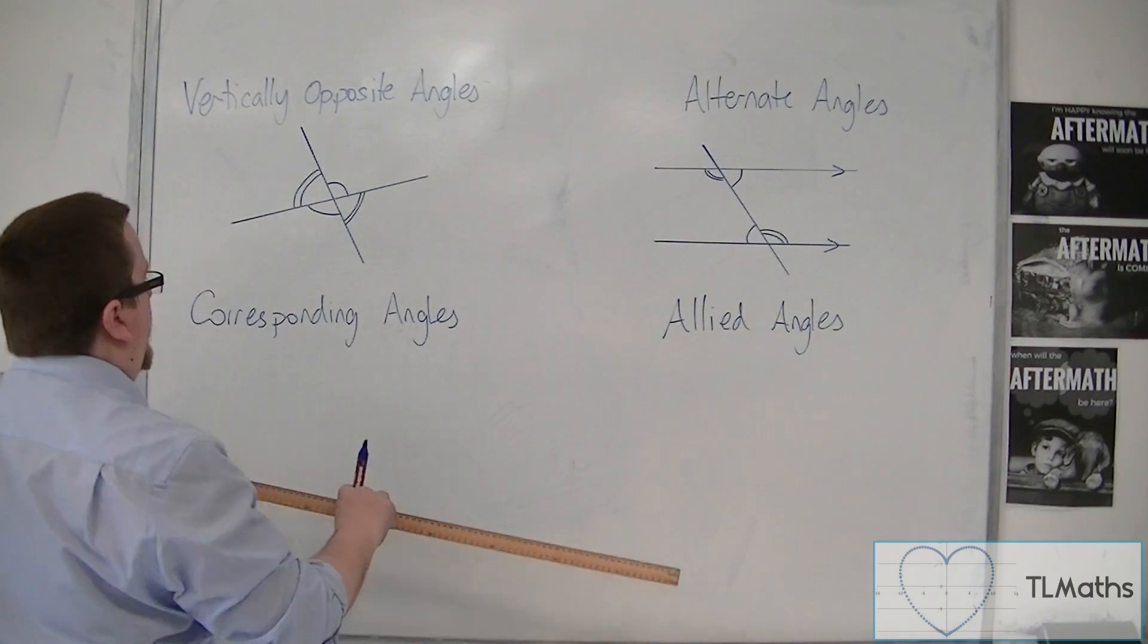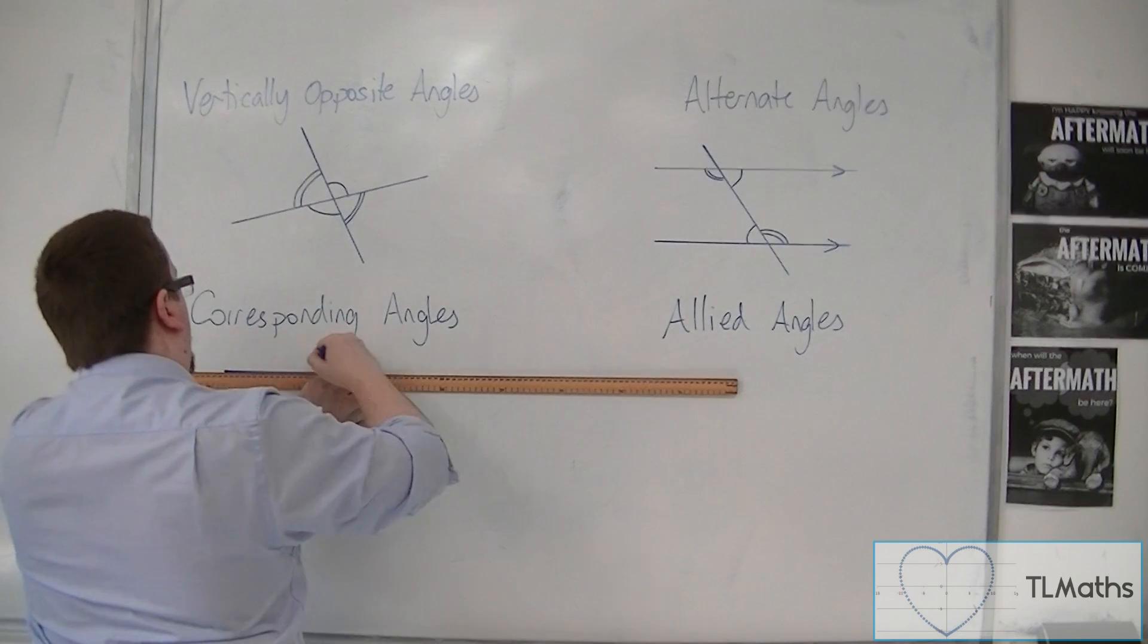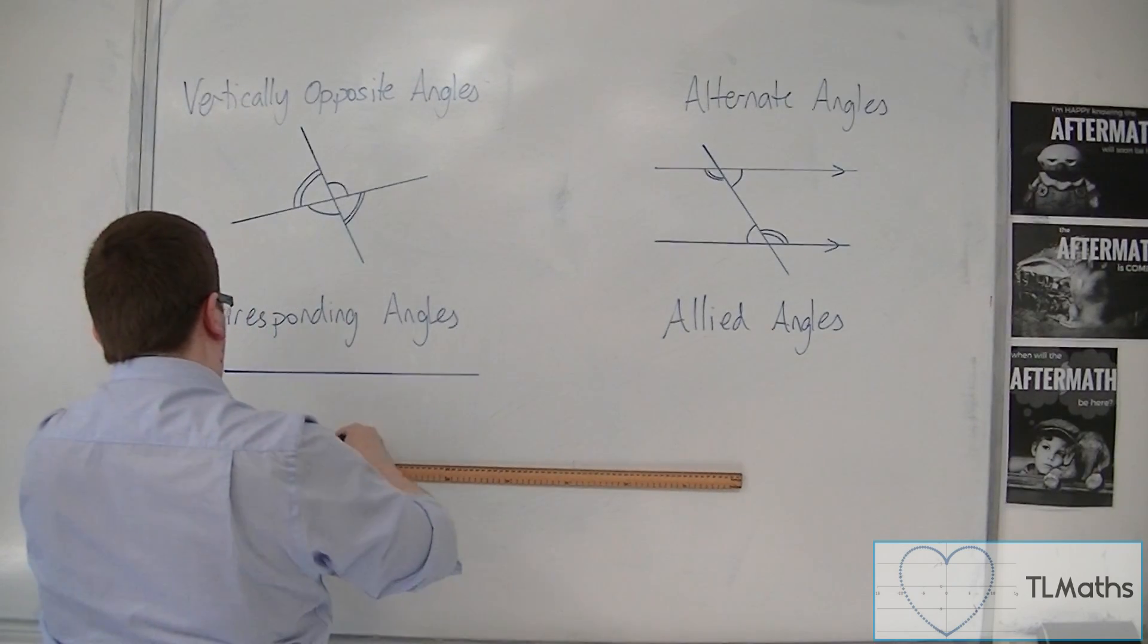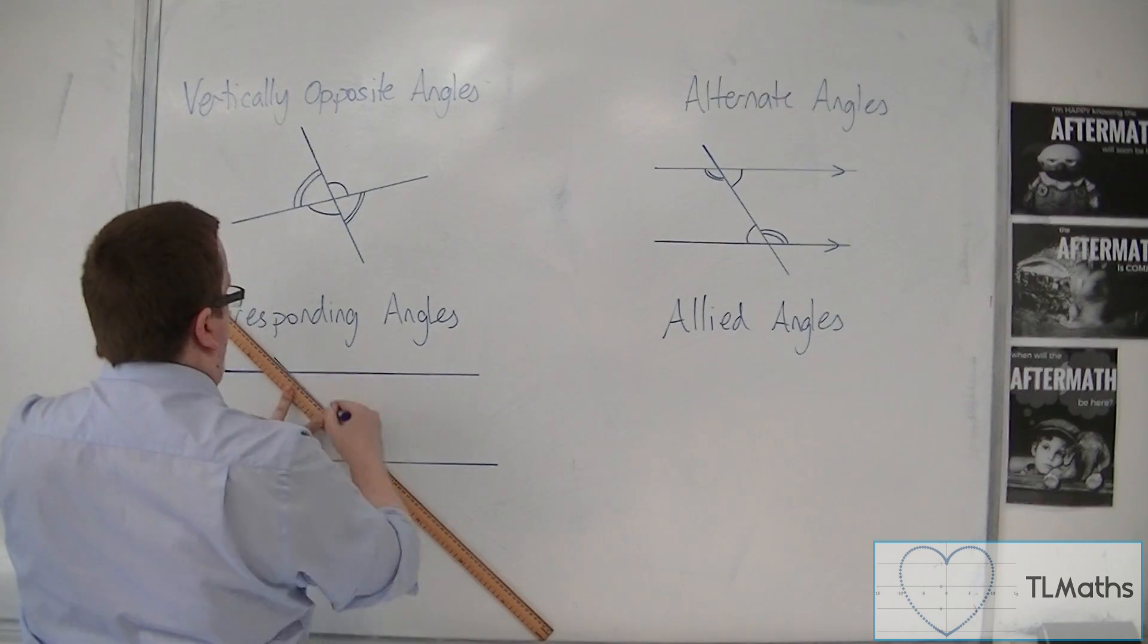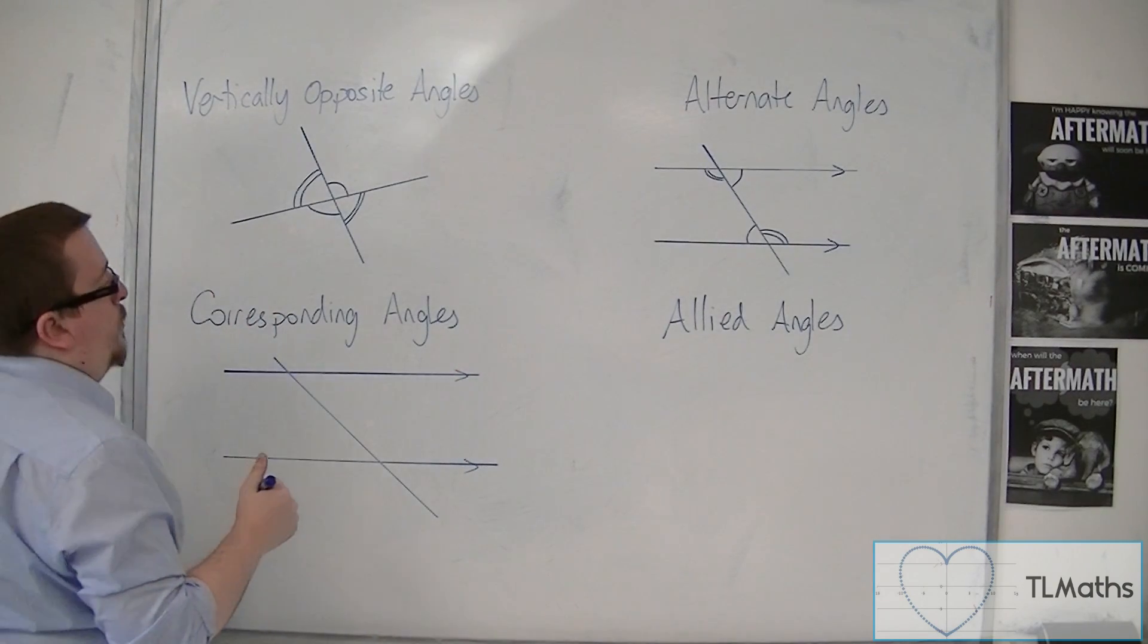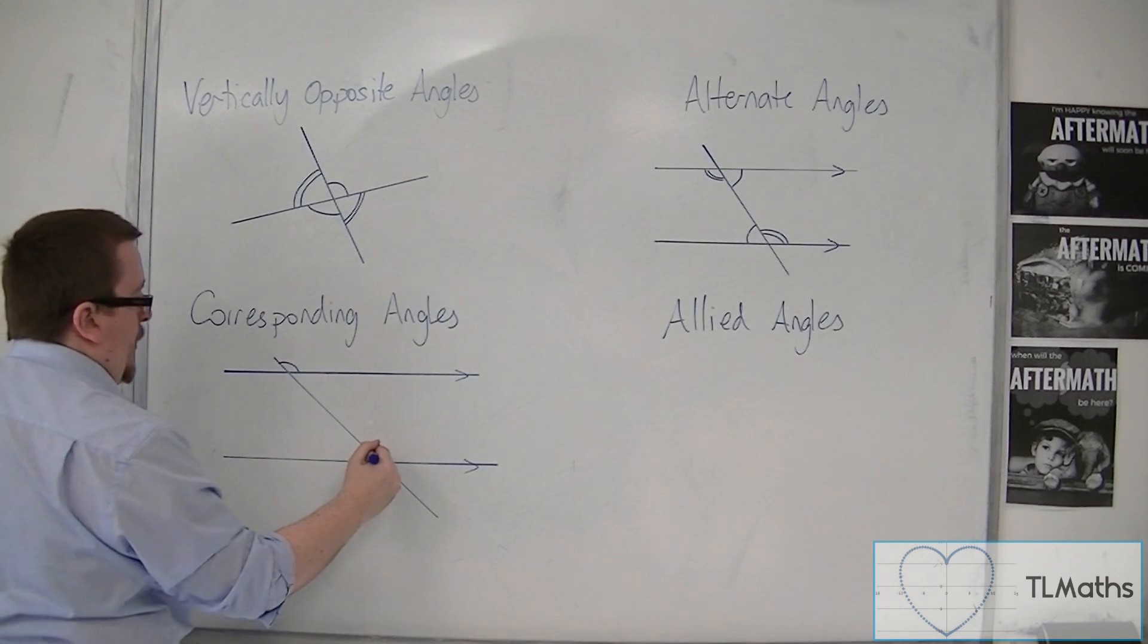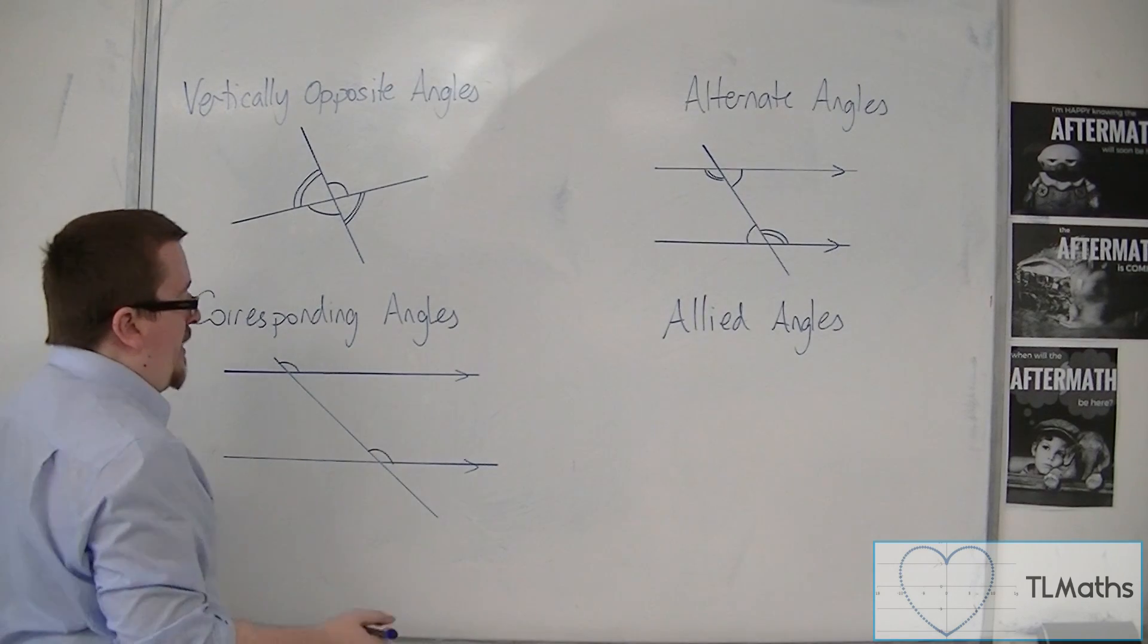Corresponding angles, we've got a very similar picture. So two parallel lines, roughly. Draw ourselves another line crossing through. Now corresponding angles, this angle corresponds to this one. So these two angles are of the same size.